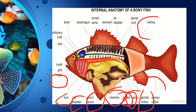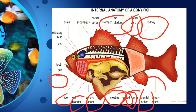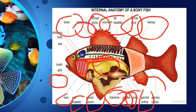The internal anatomy shows the swim bladder, the fish's stomach, the dorsal aorta, the esophagus, and the brain. Just as in humans, fish can also be classified and studied in this way. This covers both the internal and external characteristics of the fish.